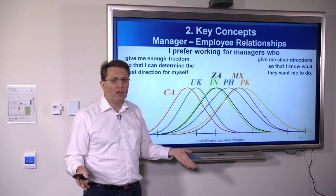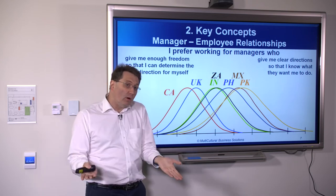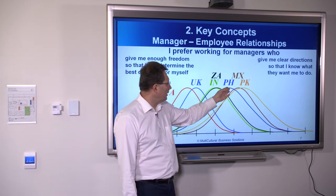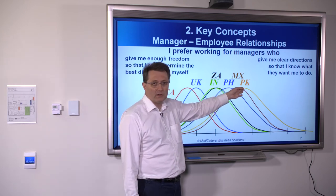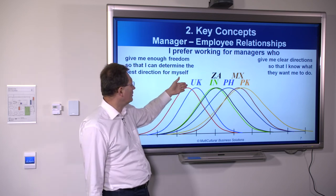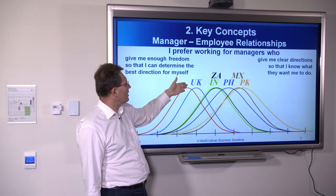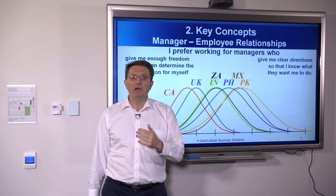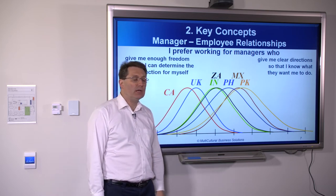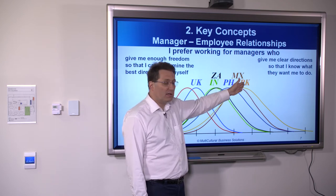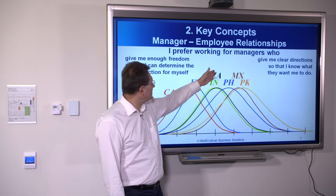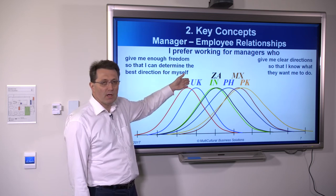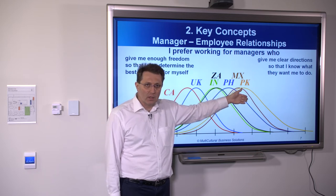At the same time, there's a wide range of opinions in every group, but on average — and these are the critical words — on average, Filipino, Mexican, or Pakistani employees like to receive more direction from their managers than the average Canadian or British employee. And we manage the way we want to be managed. So the average Filipino, Mexican, or Pakistani employee expects clearer directions from their manager than the average Canadian or British manager expects to give.